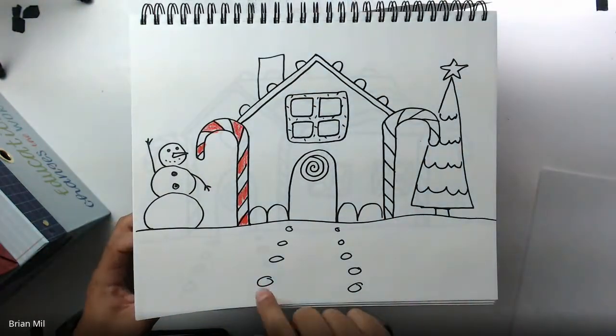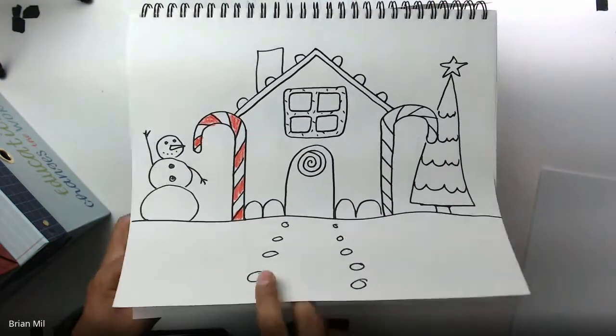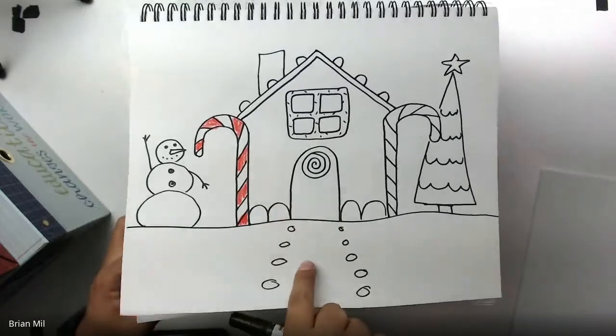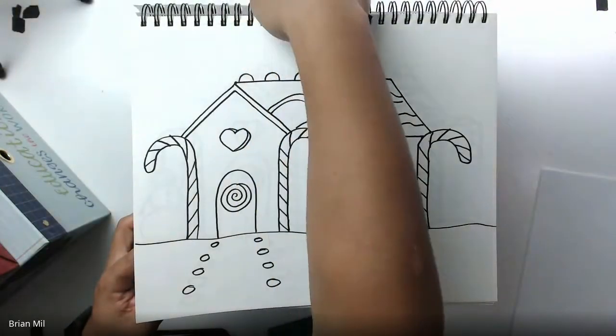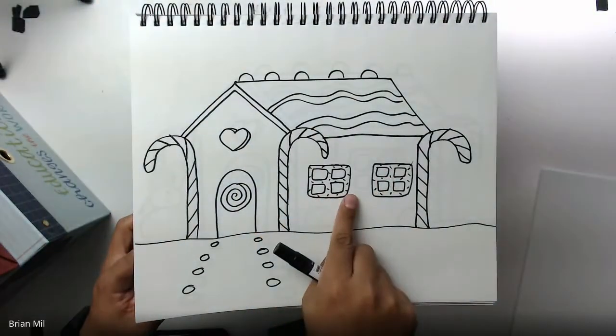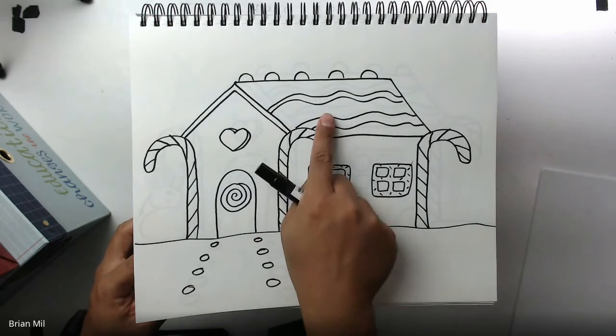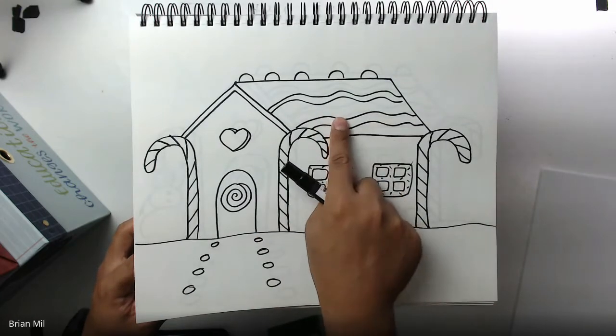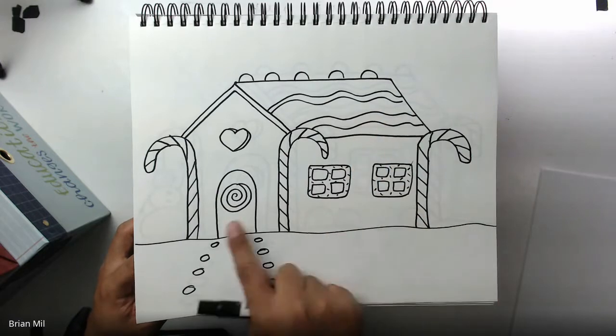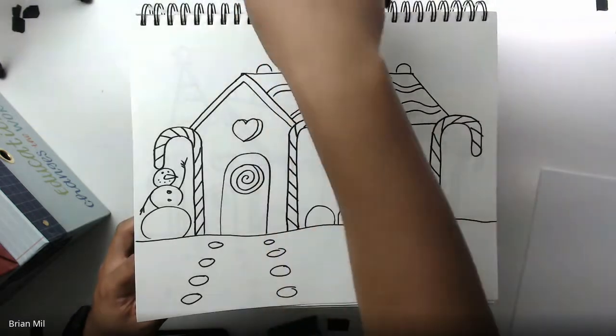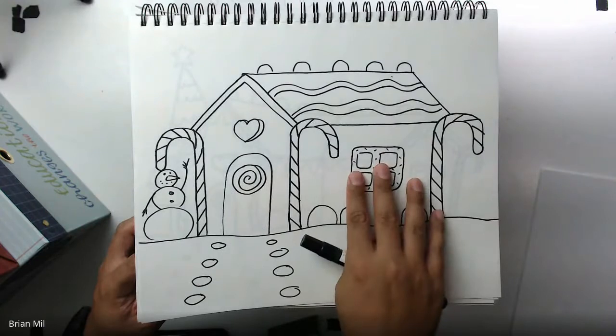For first grade, what they did was instead of just seeing the front of the gingerbread house, you're able to see the side of the house now. We were able to add two windows on the side, and we were able to see the side of the roof, which is really awesome too. Here's another first grade one - again, you can see the side of the house.